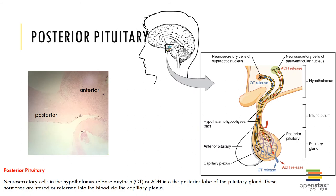The posterior lobe of the pituitary gland, connected to the hypothalamus by the infundibulum, contains the axons of hypothalamic neurons and stores and secretes hormones synthesized in the hypothalamus. Antidiuretic hormone (ADH), also known as vasopressin, increases water reabsorption within the renal tubules of the kidney, resulting in decreased water loss from urine. Oxytocin stimulates smooth muscle contractions of the uterus to initiate childbirth, and after delivery stimulates milk ejection. In both sexes, oxytocin is known as the cuddle hormone as it surges during arousal and orgasm.